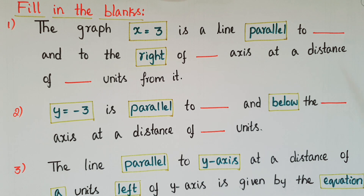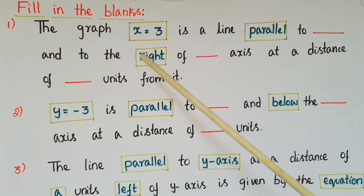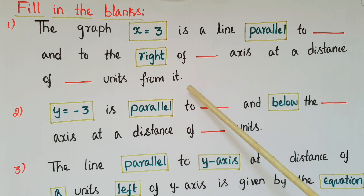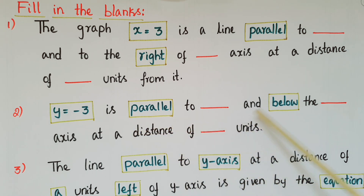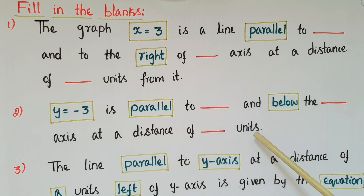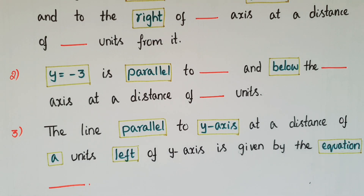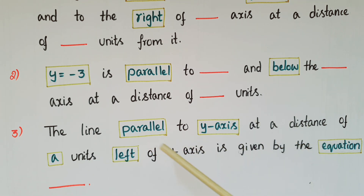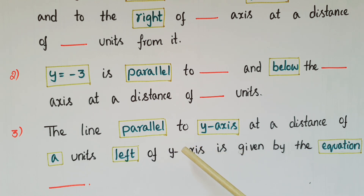Now answer these questions. First: the graph x = 3 is a line parallel to ___ and to the right of the ___ axis at a distance of ___ units from it. Second: y = -3 is parallel to ___ and below the ___ axis at a distance of ___ units. Third: the line parallel to the y-axis at a distance of 'a' units to the left of the y-axis is given by the equation ___.